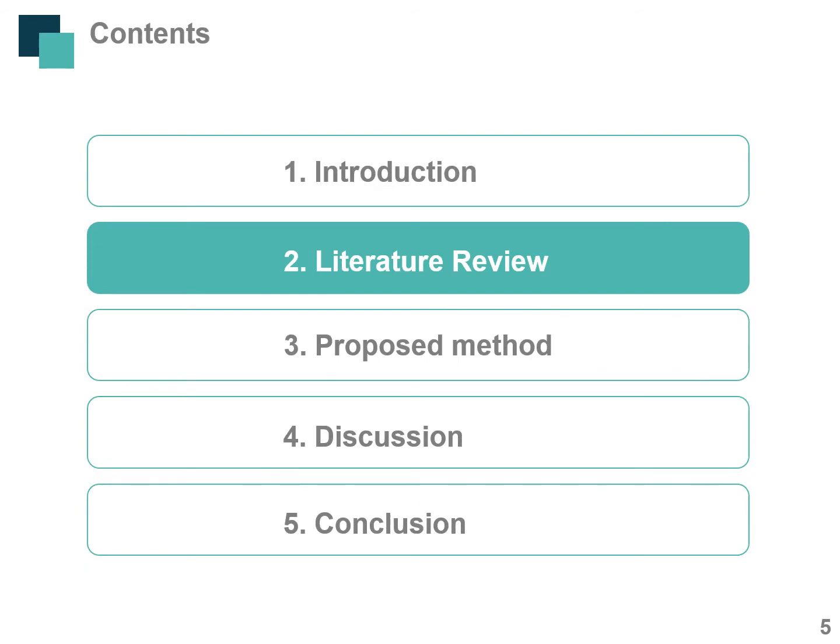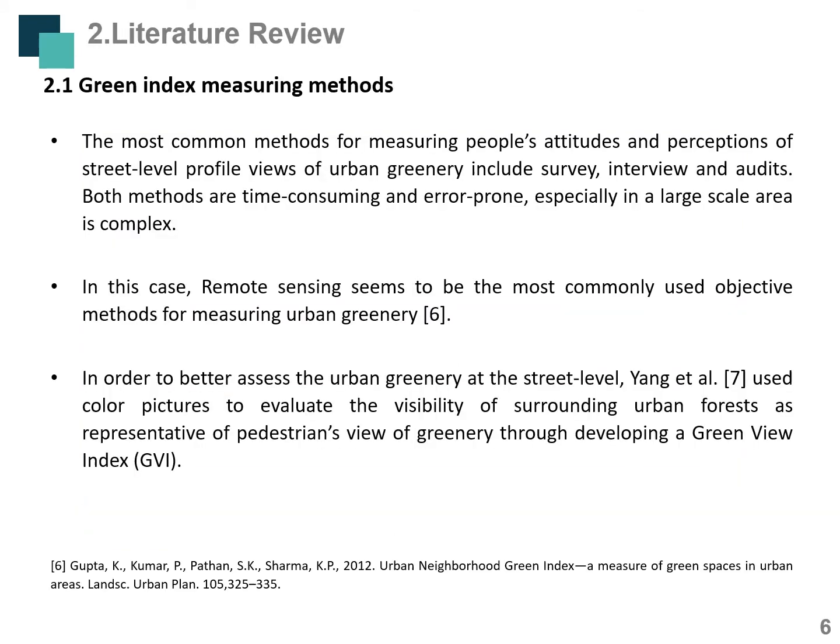The second section covers the literature review. First, I will introduce some research about green index measuring methods. The most common methods for measuring people's attitudes and perceptions of street-level views of urban greenery include surveys, interviews, and audits. However, these methods are time-consuming and error-prone, especially at a large urban scale. Therefore, remote sensing seems to be the most commonly used objective method for measuring urban greenery.